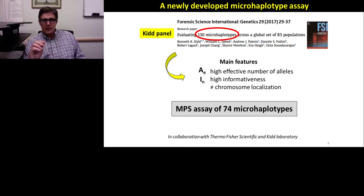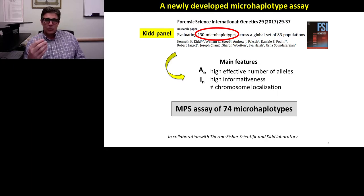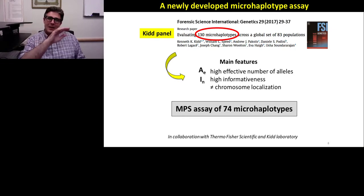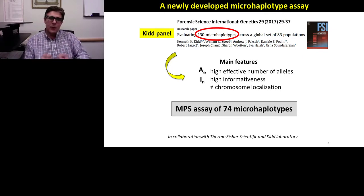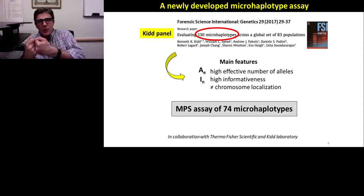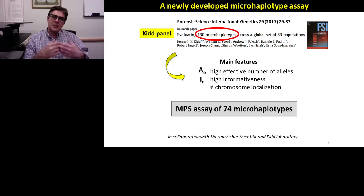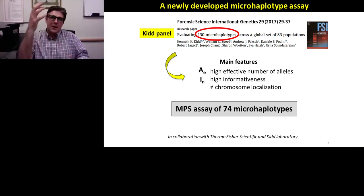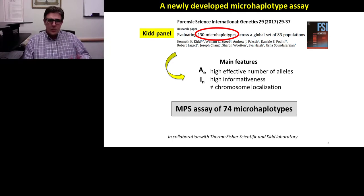We selected a subset of this panel based on two parameters. The first is AE, or effective number of alleles, which tells us how discriminating a particular locus is — essentially how balanced the allele frequencies are across alleles at that locus. The second parameter is informativeness, which tells us how unique certain alleles are to certain populations. AE allows discrimination within the same population, while higher informativeness helps discriminate between individuals from different populations.